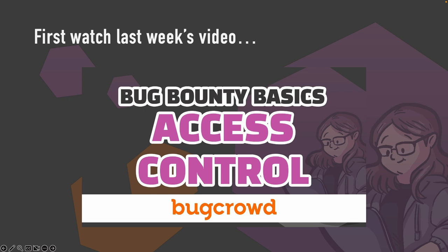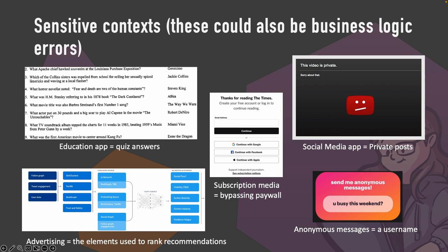Before I continue — if you haven't seen last week's video on the basics of access control testing, I'd really recommend watching that first, then coming back to this one. Some things to consider when hacking a target: you can have sensitive content that isn't necessarily personal data. For example, if you're testing an education app used for university exams, the quiz answers would still be sensitive because they could allow someone to cheat — that's not personal data or financial data, it's sensitive purely because of the context in which the target operates.